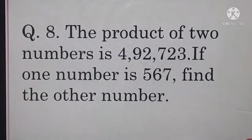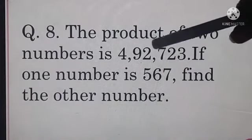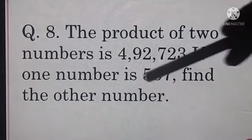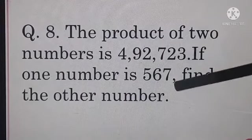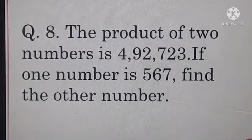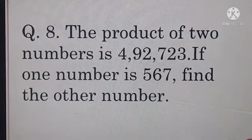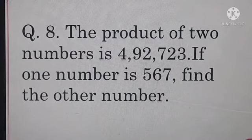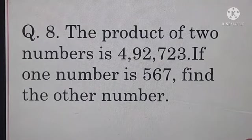Now question number 8. The product of 2 numbers is 492,723. If 1 number is 567, find the other number. Simple example: the product of 2 numbers is 12. If 1 number is 3, then find the other number. So if we divide 12 by 3, we get the other number that is 4. And you can check your answer: 4 times 3 is 12. Clear?